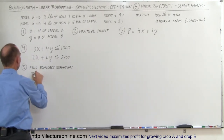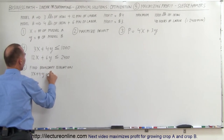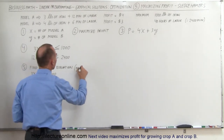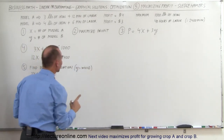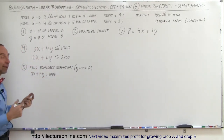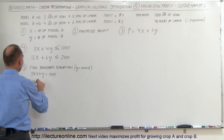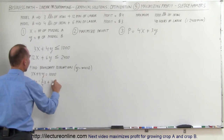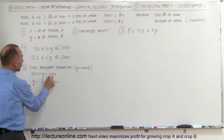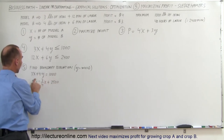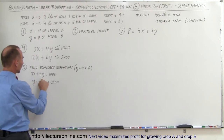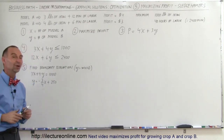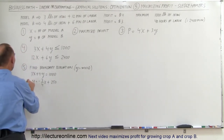So that would be 3X plus 4Y equal to 1,000, but then we want to turn it into a Y equals MX plus B type of equation so we can more easily graph it. We move the 3X over to the other side and divide both sides by 4, so we get Y equals minus 3/4 X plus 250. All I did was move my 3X to the other side — it became minus 3X — divide both sides by 4: 4Y divided by 4 is 1, 3X divided by 4 is three-quarters, and 1,000 divided by 4 is 250. This is our first equation.